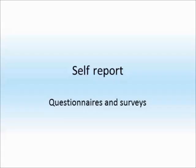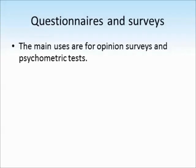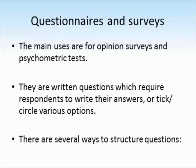Now let's look at the use of questionnaires and surveys in psychology. The main uses are for opinion surveys and psychometric tests. They tend to be written pen and paper tests where you give somebody a sheet of printed questions and take in their responses at the end. This can be done face to face, or questionnaires can be posted out and sent back to the researcher. Typically they require yes or no answers, or participants could be asked to tick or circle various options. There are different ways we can structure questions in a survey.